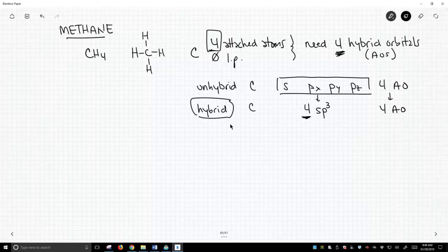So when we counted out, we have four attached atoms. We were thinking, we need four hybrids, so we're going to use each of those hybrids to bond to each of those hydrogens. So here's our carbon.